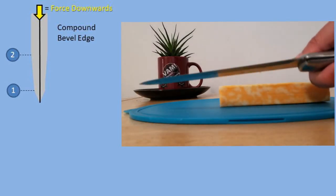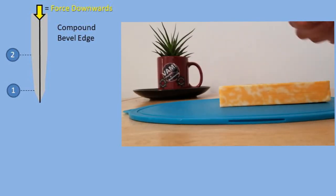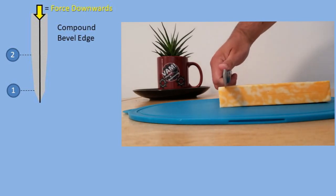In this problem, we'll be solving for the ideal mechanical advantage of a compound bevel edge knife going through a block of cheese.